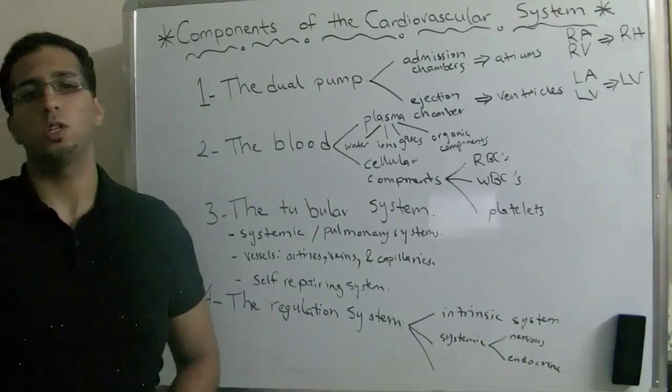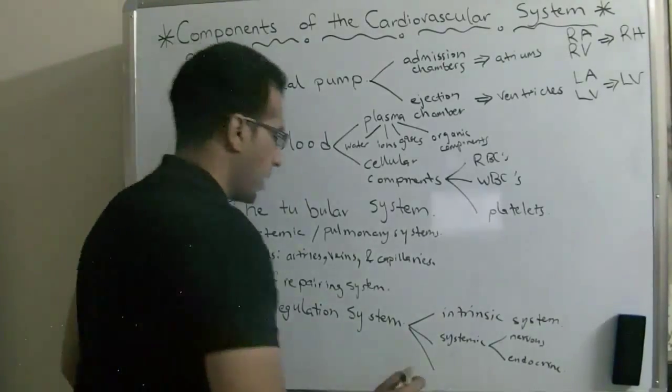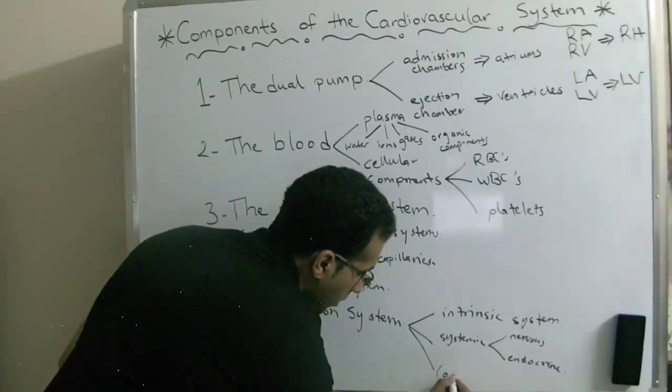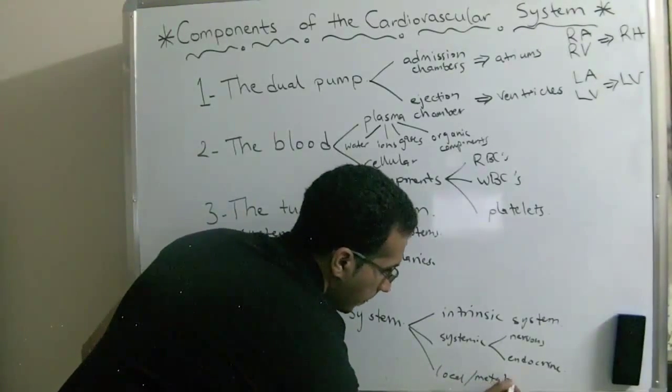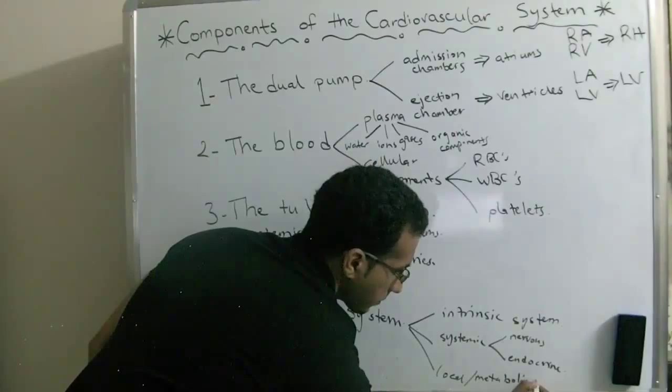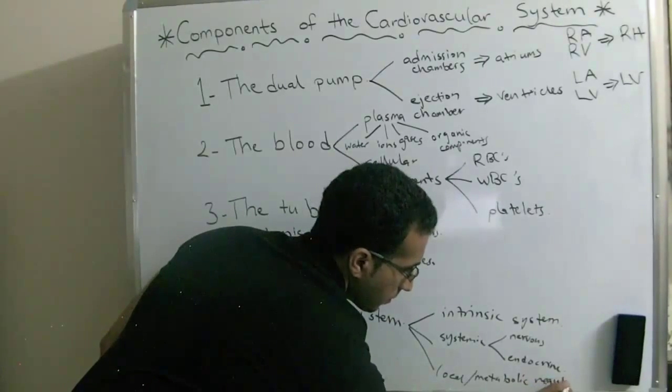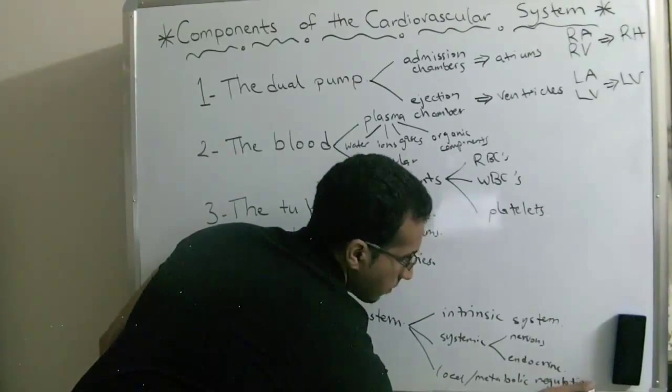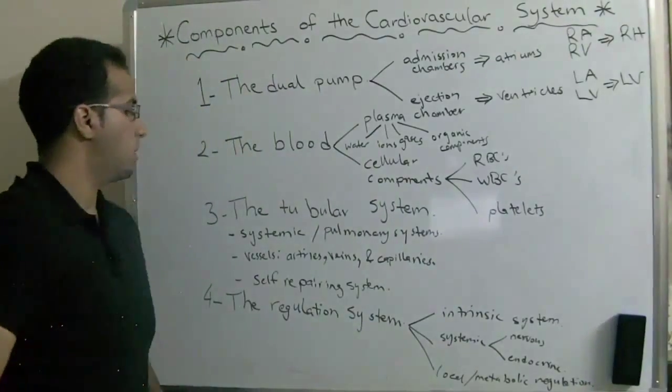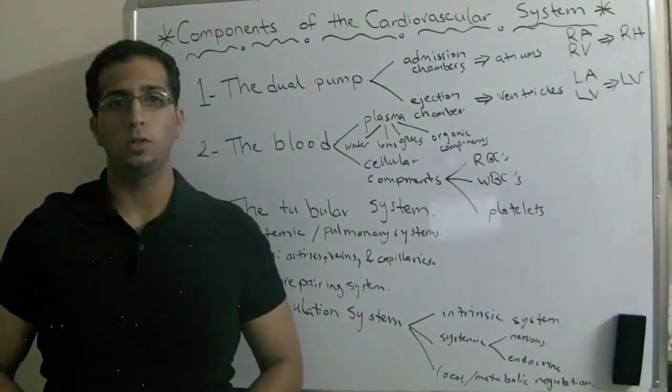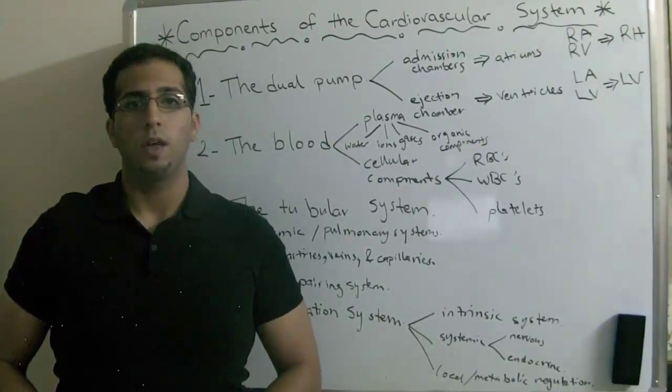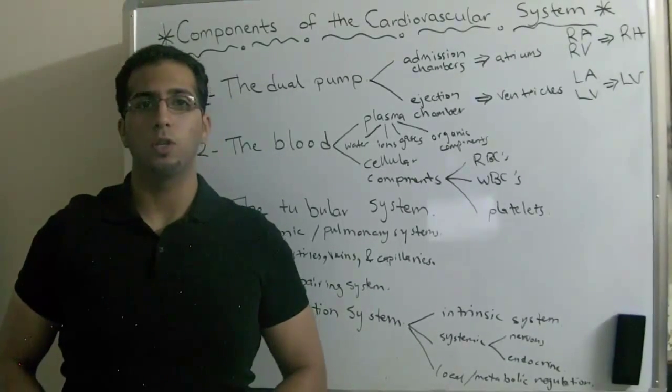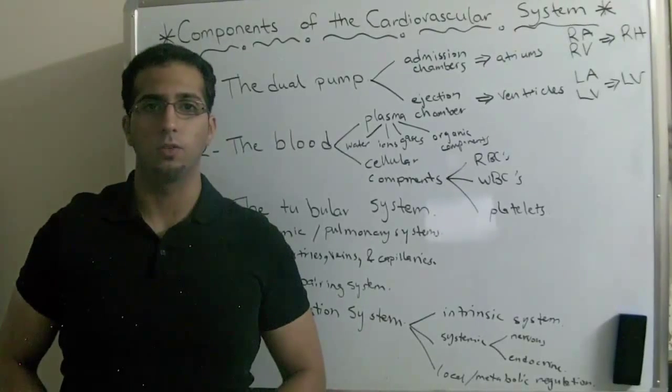And the last part is the local or metabolic regulation. So these were the components of the cardiovascular system that we discussed. Thank you everybody and hope to see you again in the next videos.